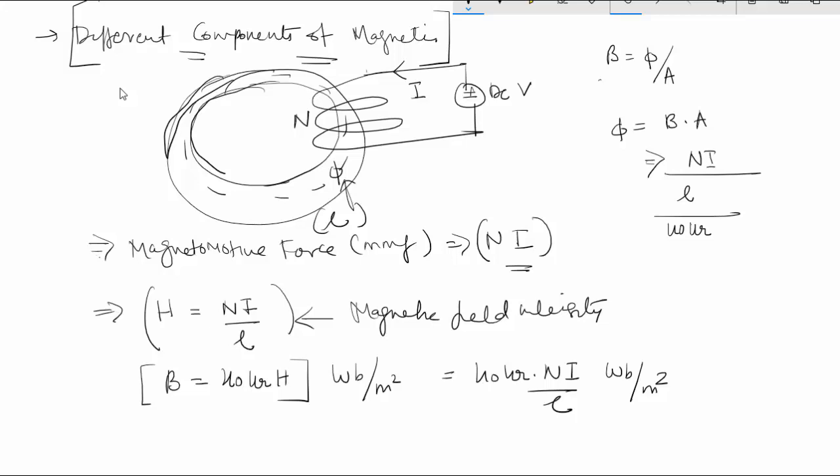So this whole thing is known as the reluctance of the magnetic circuit, which is very much similar to the resistance. So the reluctance is equal to L divided by μ₀μᵣ times A.